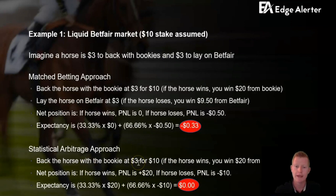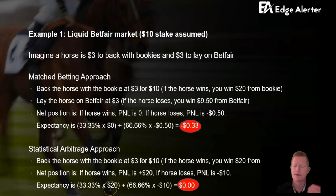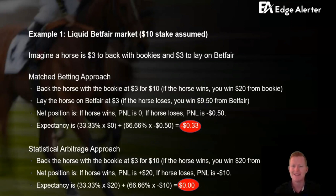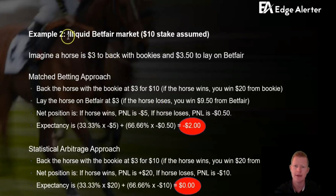The statistical arbitrage approach is similar in that you still take the $3 value with the bookie, but you don't bother with Betfair at all. Net position: you win $20 or you lose $10 — there is more variance, but the expectancy is exactly zero. So instead of a negative 3.3% expectancy, you're at zero. Both approaches have the same promotional value from a second or third place promotion, so it's 3.3% profit on turnover inferior — and that's for a liquid Betfair market.